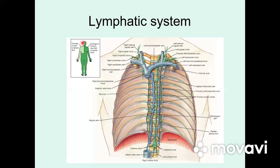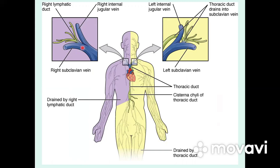The thoracic duct opens into the left venous angle, which is between the left internal jugular vein and the left subclavian vein. Lymph from the right upper limb drains into the right lymphatic duct, while lymph from all other parts of the body drains into the thoracic duct.